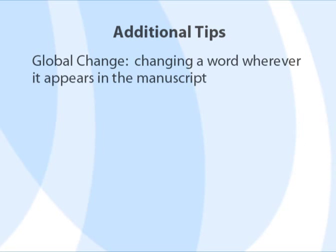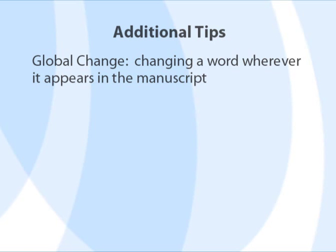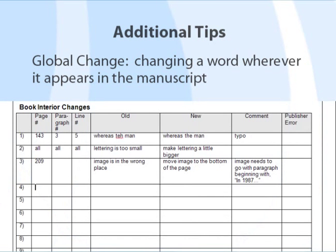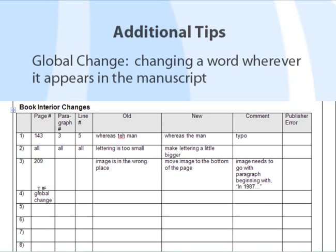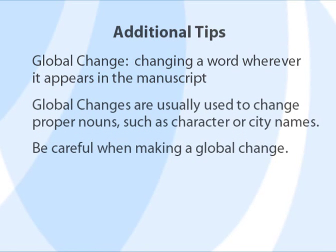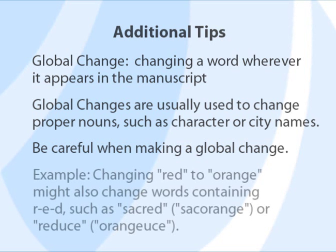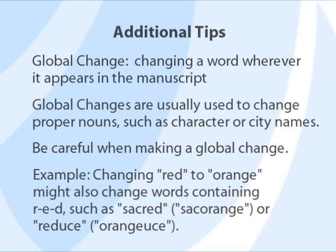If a word is misspelled throughout your book, you do not need to list every instance of the word on the proof form. This kind of change is called a global change. On the proof form, under page number, type 'global change.' You can skip paragraph number and line number. Under old, type the word as it appears now, and then under new, type the word as it should appear when corrected. Global changes are usually reserved for proper nouns, such as the names of certain characters or cities. It is important to be careful when making global changes — for example, you might not want to globally change the word 'red' to 'orange,' because 'red' is also a part of many other words.